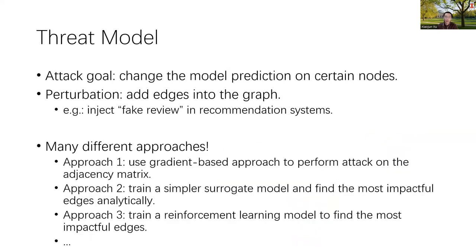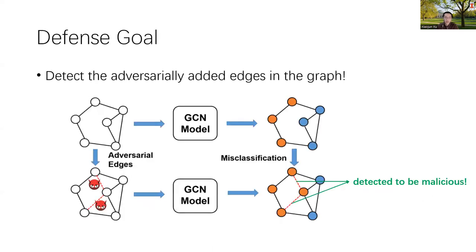To formalize our threat model: the attacker will add edges to change the model prediction. Under this threat model, many different attacks have been proposed — gradient-based approaches, surrogate model-based approaches, and reinforcement learning techniques. All these different attacks fall under this threat model, and our goal is to detect all these attacks — specifically, to detect the adversarially added edges in the graph.